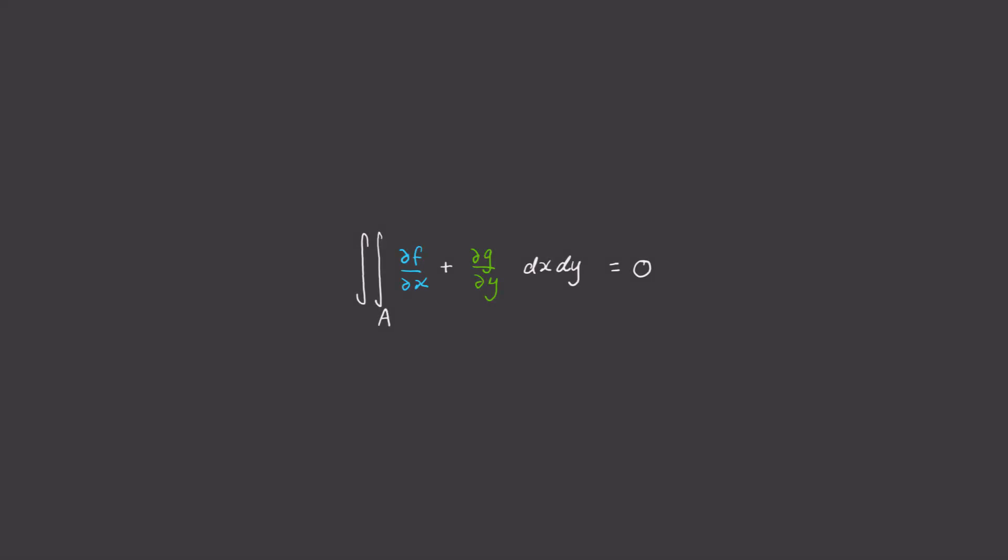And this tells us that we no longer need to integrate over the curve c, we just need to integrate over the area a inside this curve. Okay, so we know that for any closed curve this double integral must be equal to 0.